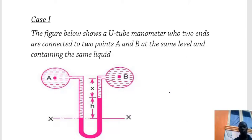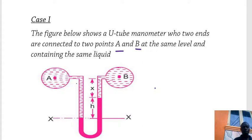In case number one, the figure below shows a U-tube manometer whose two ends are connected to two points A and B at the same level and containing the same liquid. So this is a differential manometer whose two ends are connected to two pipes which are at the same level and containing the same liquid. The measurements taken are: the level of the manometric fluid and also the distance of the centers of the A and B pipes from the manometric fluid in the right limb.